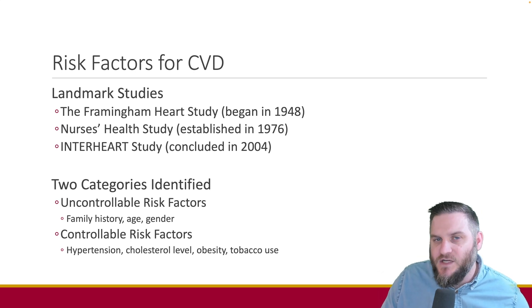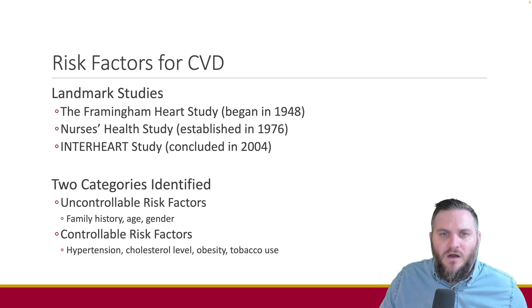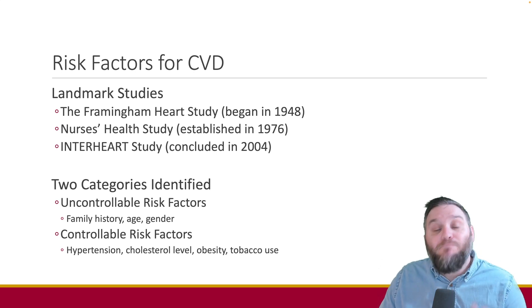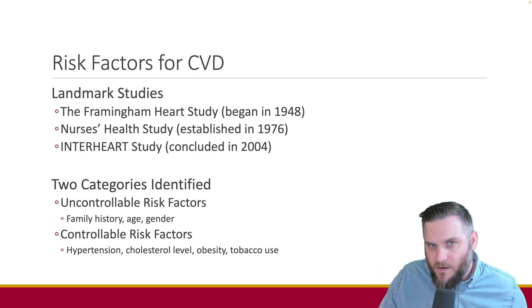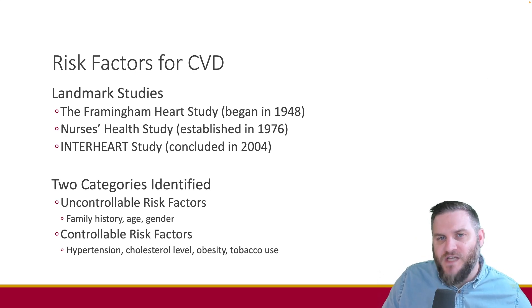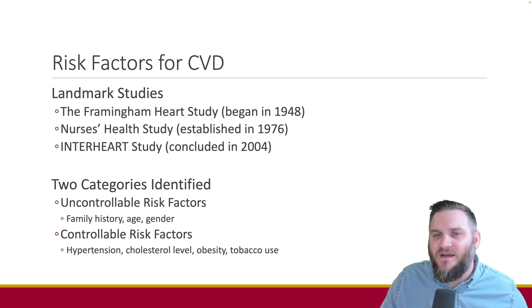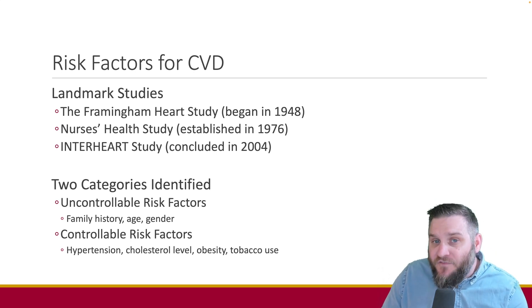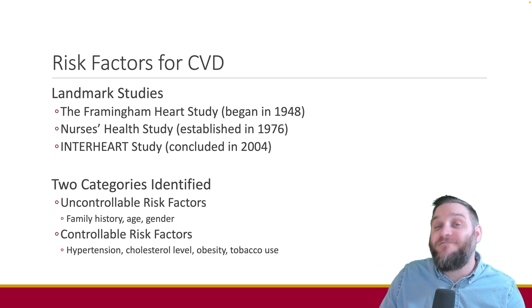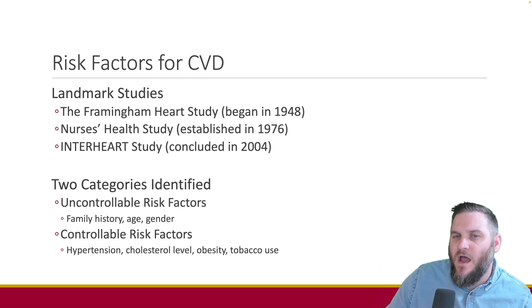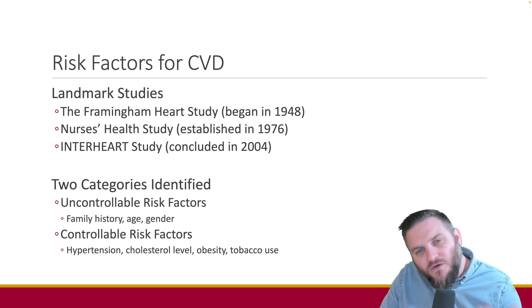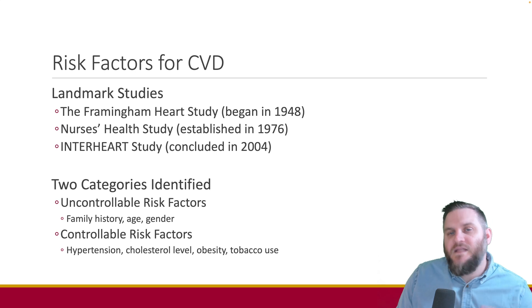We can reduce the risk of CVD by making lifestyle modifications — the controllable risk factors — such as reducing hypertension, regulating body weight, improving our diets to reduce serum cholesterol, and increasing exercise. Comprehensive interventions that combine stress management, aerobic exercise, and low-fat diets can even reverse CVD development. And let's not forget the power of psychology: gaining control over environmental triggers for angry reactions and modifying negative outcomes are also effective strategies.